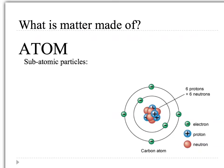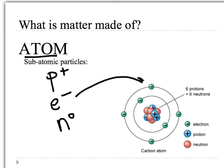The atom is subdivided into three parts: we have the protons being the positive particles, we have the electrons being the negative, and then we have the neutrons being the neutral part of the atom. As you can see, the electrons are orbiting the nucleus, and the nucleus has the protons and the neutrons in it.